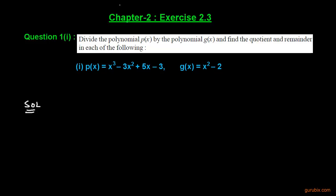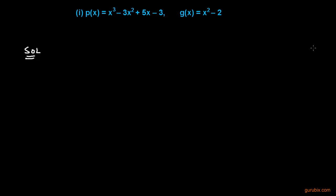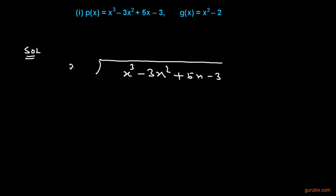We are given two polynomials p(x) and g(x) and we have to divide p(x) by g(x). This means p(x) is the dividend, so we shall write the dividend here: x raised to the third power, minus 3x squared, plus 5x minus 3. And we shall divide it by x squared minus 2.